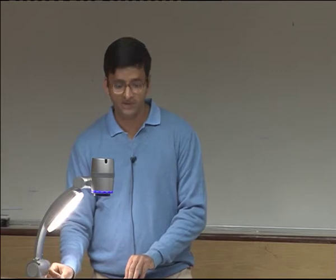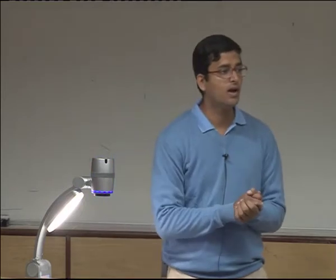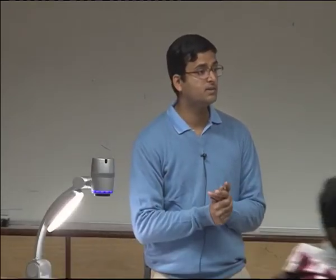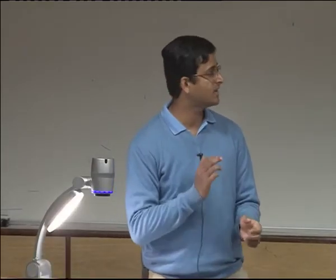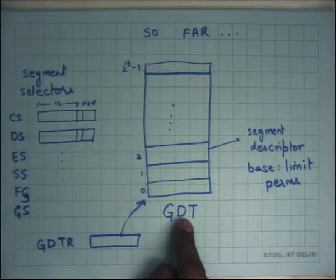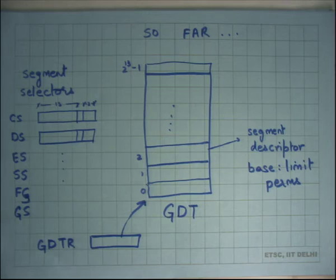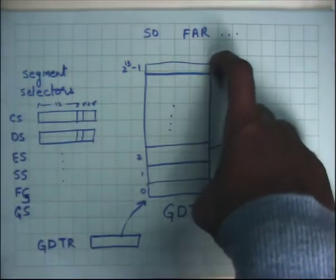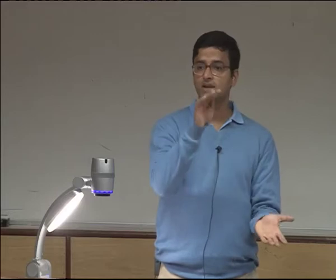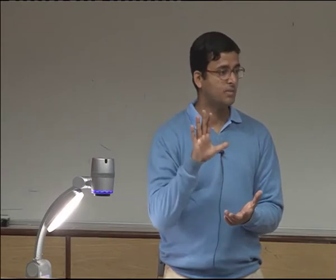Welcome to Operating Systems lecture 8. So far we have been looking at how an operating system implements its abstractions. The first abstraction we looked at was the address space. Segmentation is one way to implement address spaces, and there is a structure called the Global Descriptor Table which lives in physical memory. It is roughly of size 2 to the power 13, which is perhaps why it must live in physical memory, since the chip does not have enough capacity to store large structures like this.